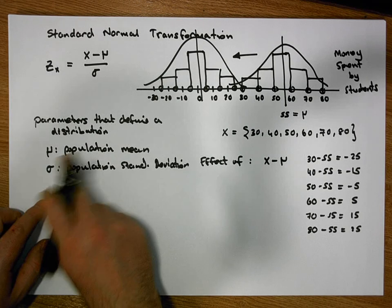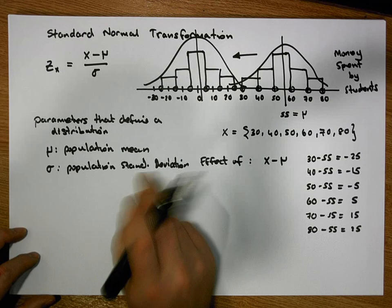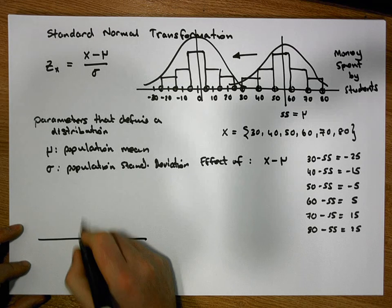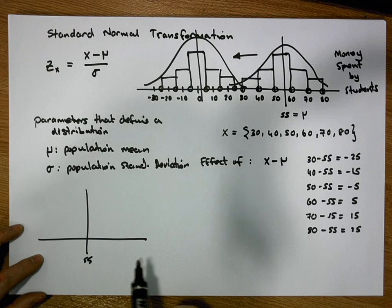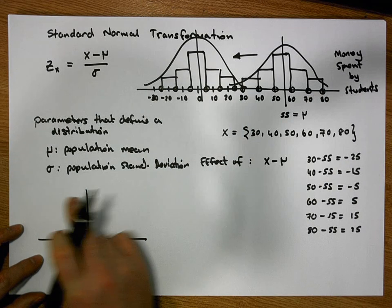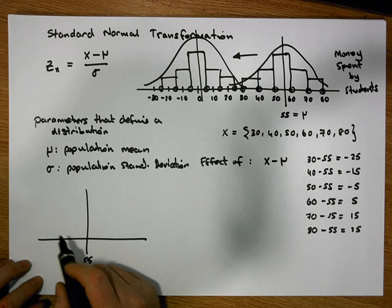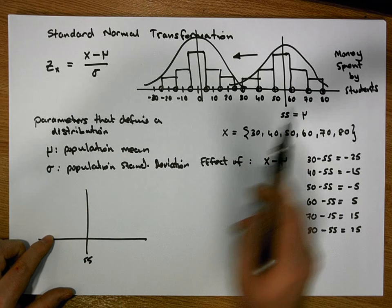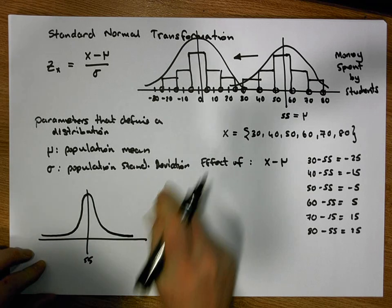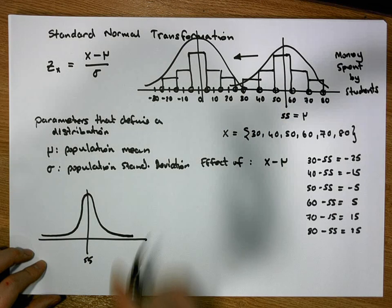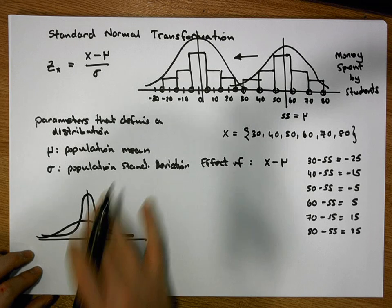Every population has a mean and a standard deviation. Consider a population centered on 55 euros — the money-spent distribution. The standard deviation defines the dispersion: how fat or skinny the curve is. If observations are on average close to the mean, the standard deviation is small and the distribution is skinny. If they are far from the mean on average, the standard deviation is large and the distribution is very wide.